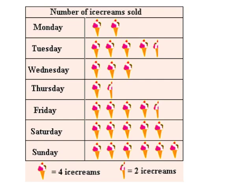Now let's look at an example of a pictograph. A pictograph is similar to a bar graph, but there's one big difference. A pictograph, instead of having bars, uses pictures or little symbols to show how many there is of something. So let's first look at the title: 'Number of ice creams sold.' The legend at the bottom shows us that one picture of an ice cream cone actually equals four ice creams in real life. And so half of an ice cream cone picture would equal two ice creams, because two is half of four.